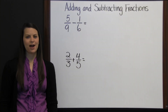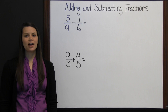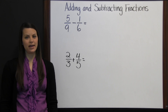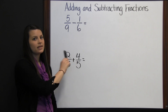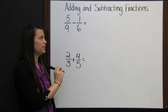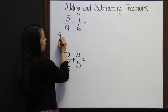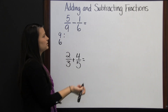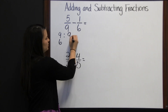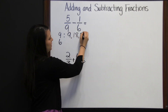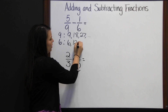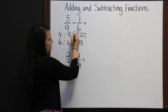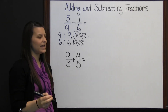Adding and subtracting fractions. To add and subtract fractions, first make sure that the denominators are the same. If they aren't — like in 5 ninths minus 1 sixth — then we need to find the least common denominator. The least common multiple of 9 and 6 can be found by listing the multiples: 9, 18, 27... and 6, 12, 18. Our least common multiple is 18.